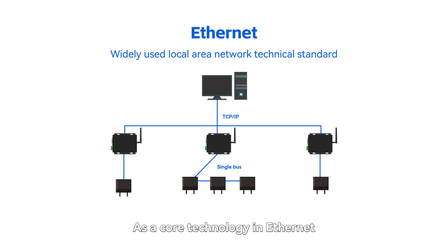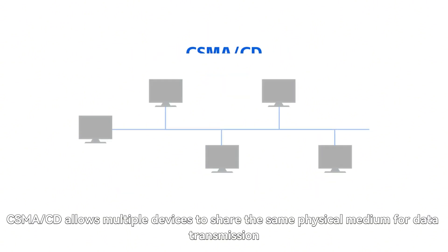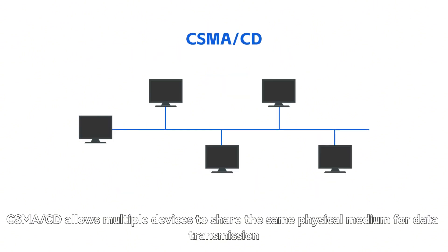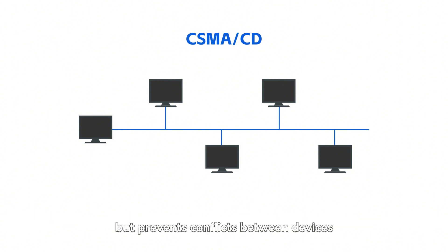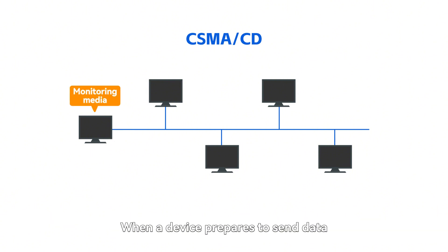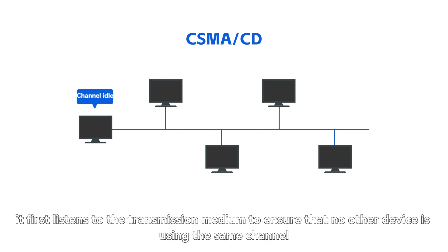As a core technology in Ethernet, CSMA-CD allows multiple devices to share the same physical medium for data transmission, but prevents conflicts between devices. When a device prepares to send data, it first listens to the transmission medium to ensure that no other device is using the same channel.